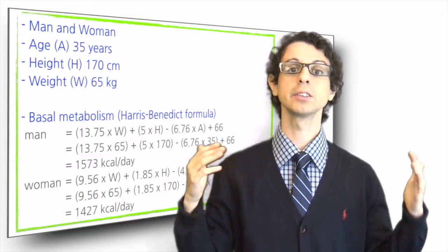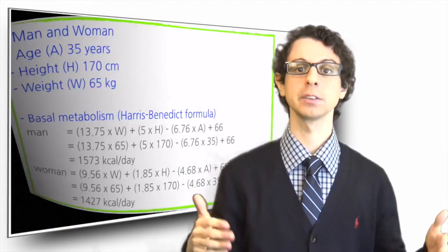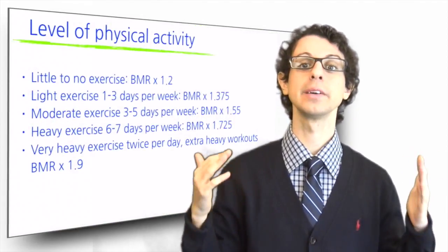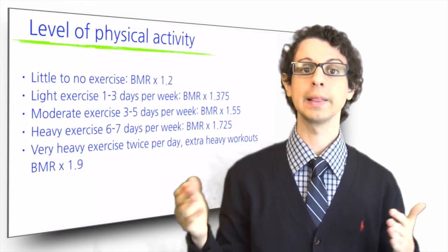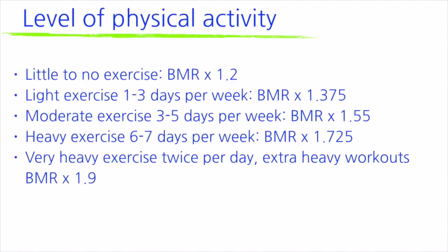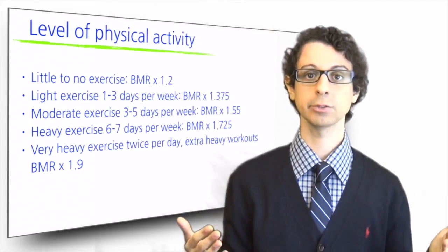Next, we want to estimate their total energy requirement, and for that, we have to multiply these values by a factor depending on their level of physical activity according to these instructions: little to no exercise, basal metabolism times 1.2; light exercise 1 to 3 days per week, basal metabolism times 1.375; moderate exercise times 1.55; heavy exercise times 1.725; and very heavy exercise twice per day, extra workouts, basal metabolism times 1.9.